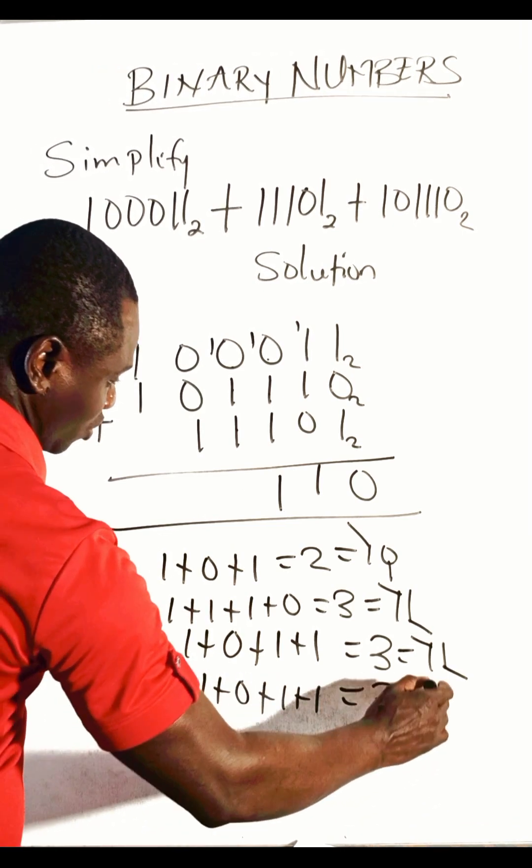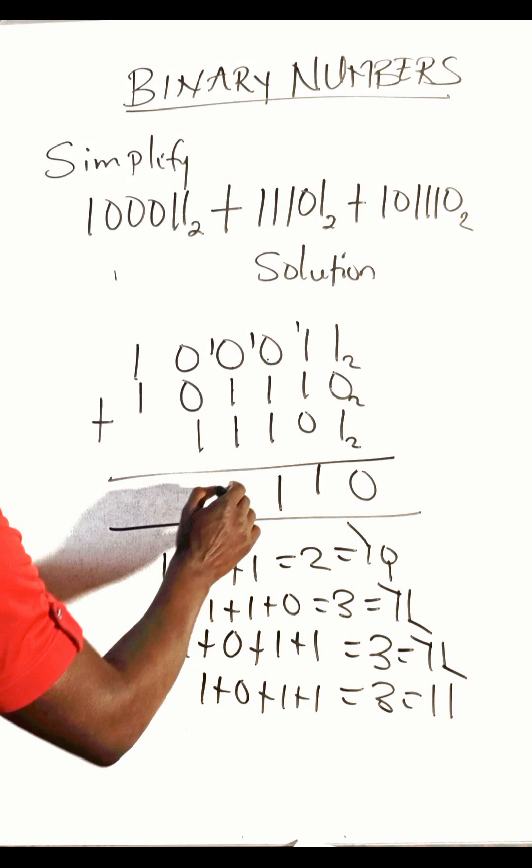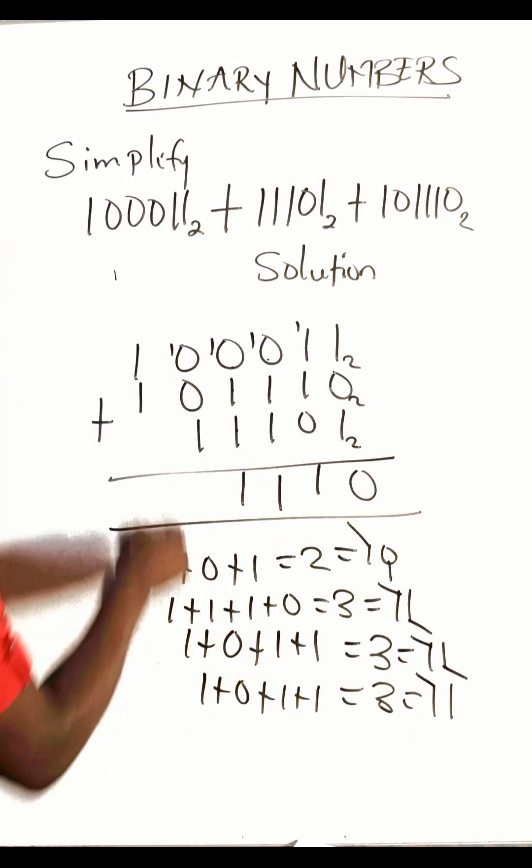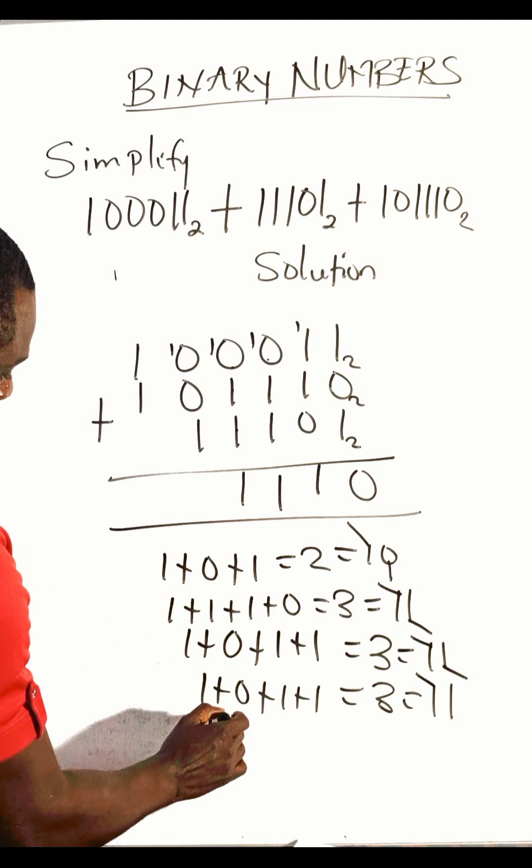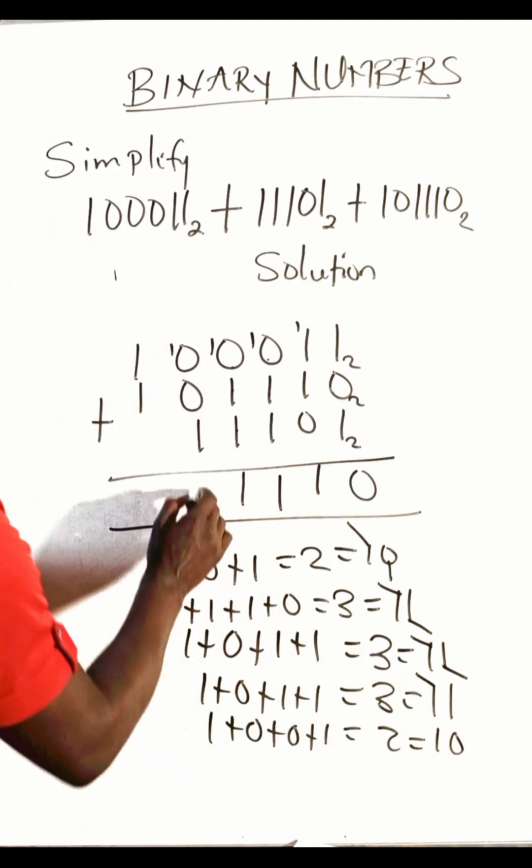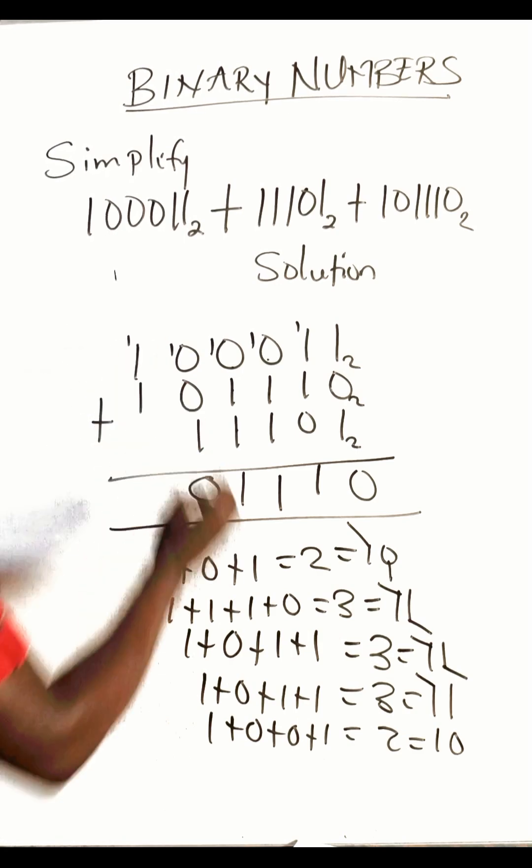And one plus zero plus zero plus one gives us two. In binary, two is ten, so you write zero, carry one.